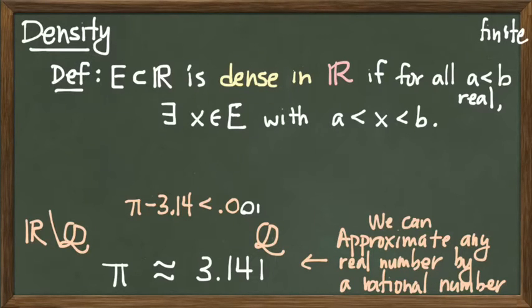There's no way to get two elements of the reals that have no element of E between them. So no matter how close A is to B, there's always some element of our set in between. That's what it means for a set E to be dense in the reals.